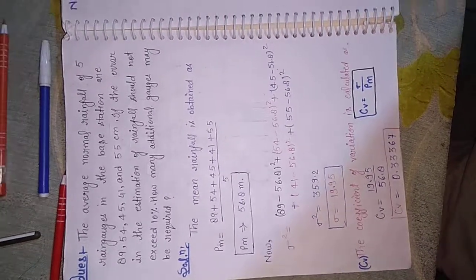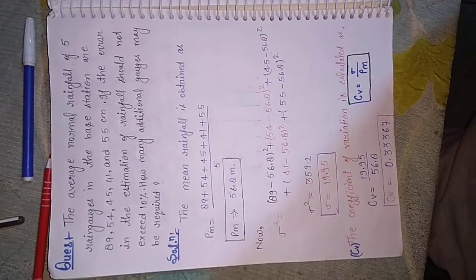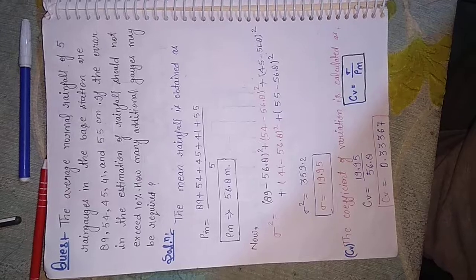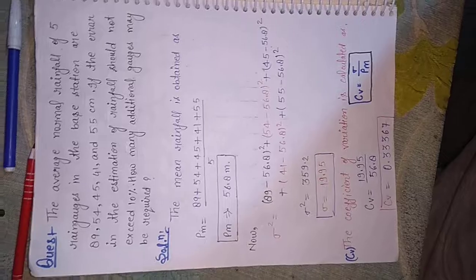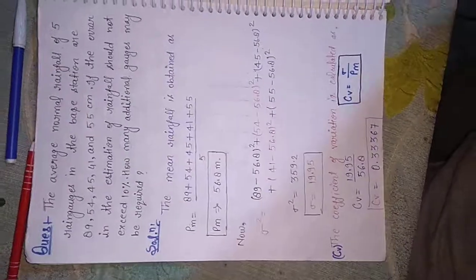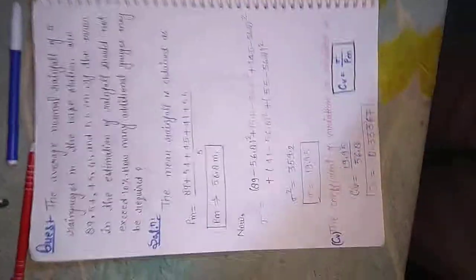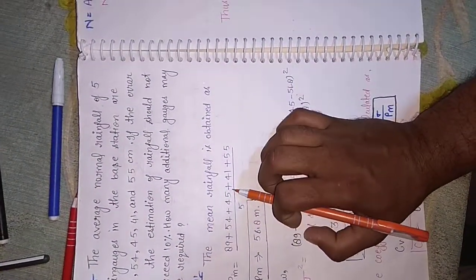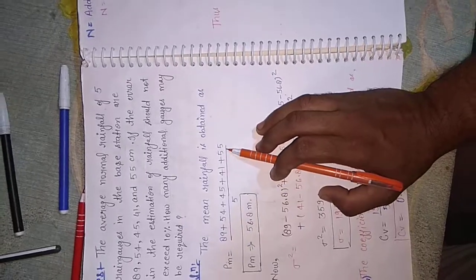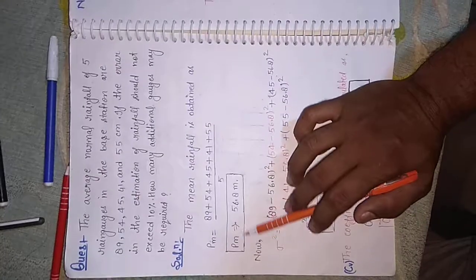If the error in the estimation of the rainfall should not exceed 10%, how many additional gauges may be required? First of all, we are calculating the mean rainfall Pm: 89 plus 54 plus 45 plus 41 plus 55, where the number of stations is 5, divided by 5.